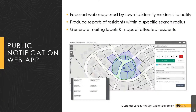The public notification web app is another example of a focused application. It's unique because it's used internally by local government to share information with the public. This map is used to identify residents within an affected area or radius of a specific property. You can select a property and set any search distance — most towns refer to these as 200-foot owner's lists. The user can then produce a printed map or mailing labels addressed to affected residents, all from within this one web application.